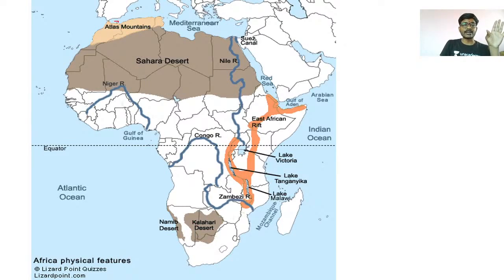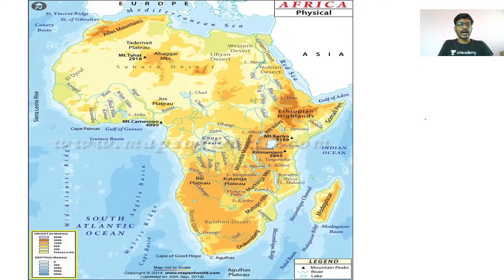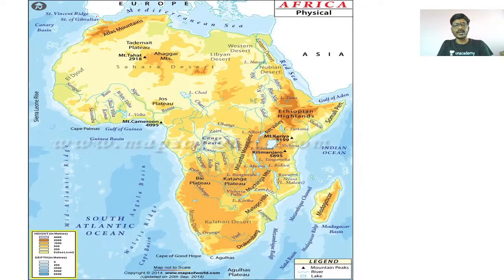Very importantly, the Atlas Mountains are present in Africa. This name sounds unusual but these mountains are in the continent of Africa. Going ahead: Gulf of Aden, then Red Sea, then Mediterranean Sea, then Strait of Gibraltar, then the Atlantic Ocean.